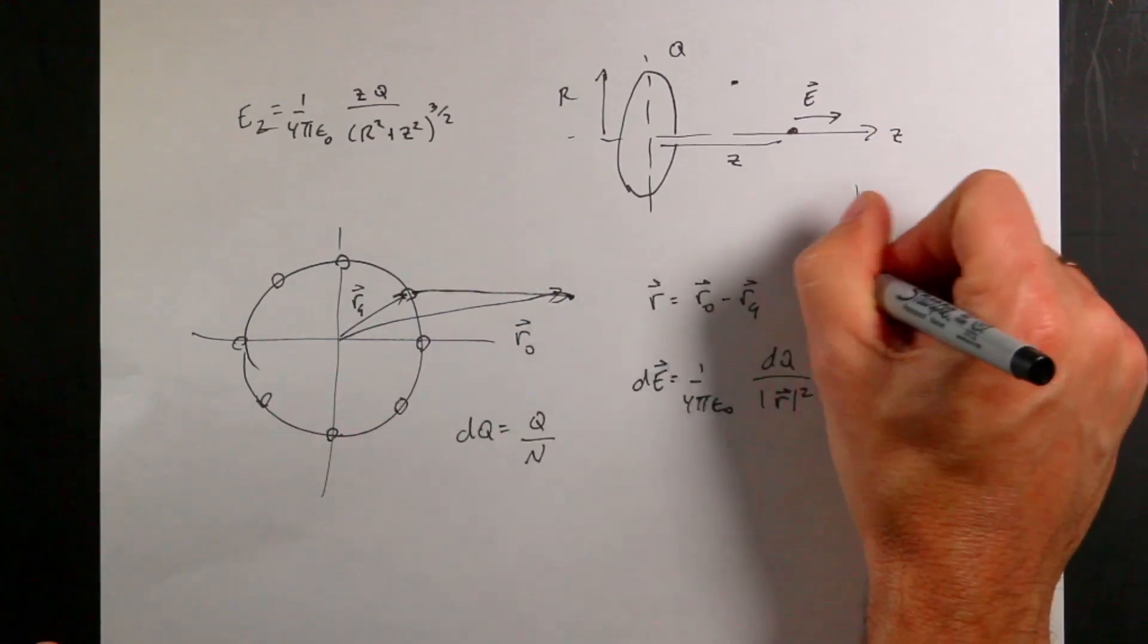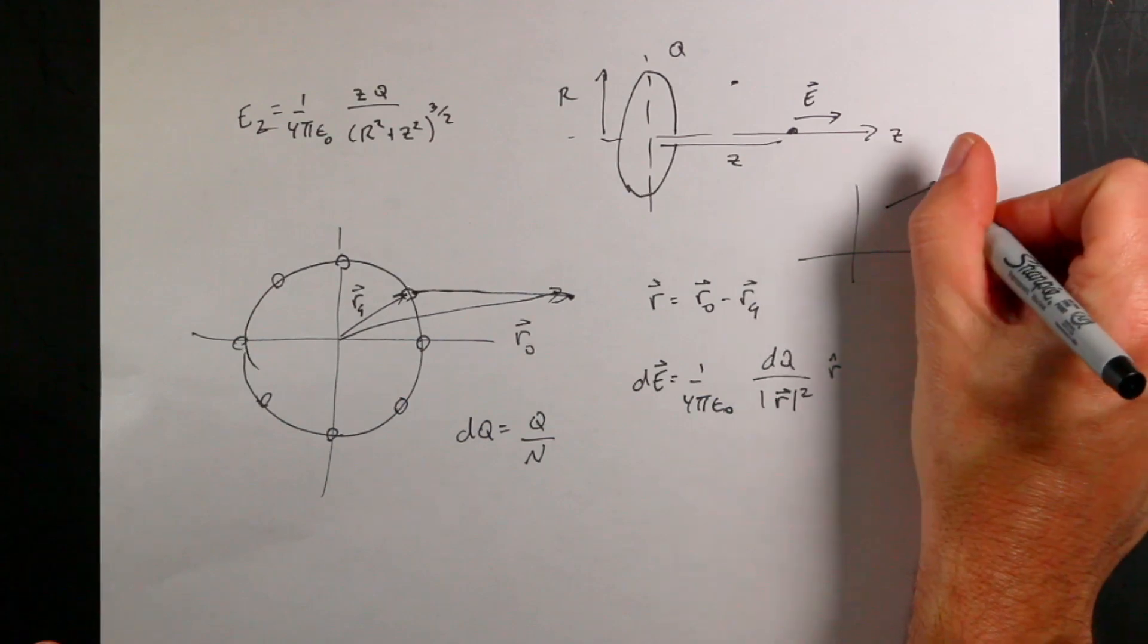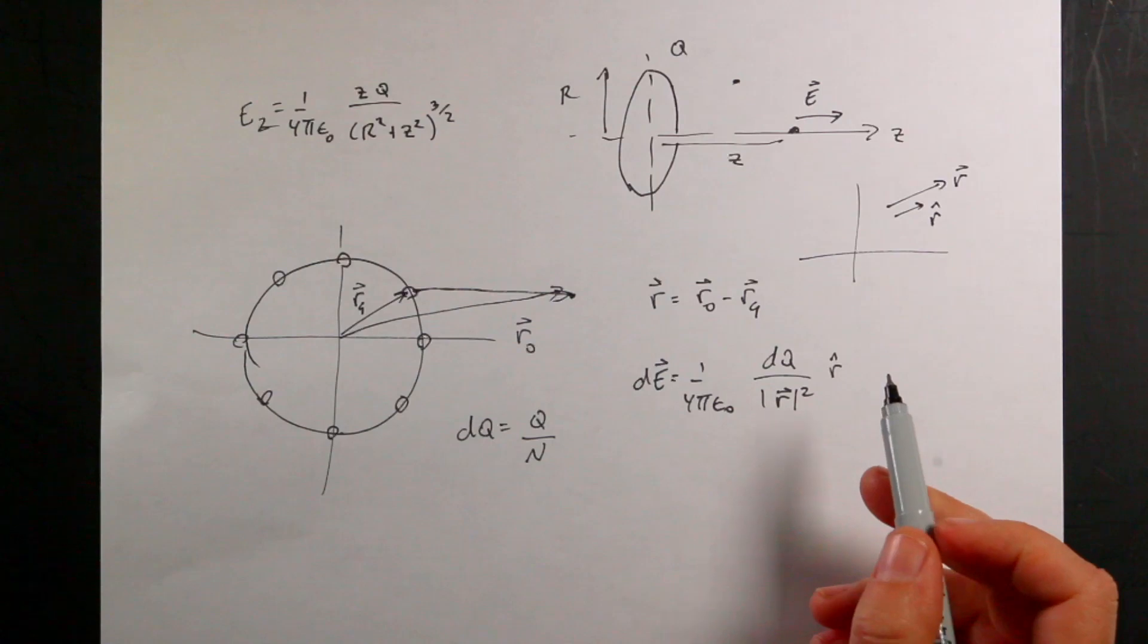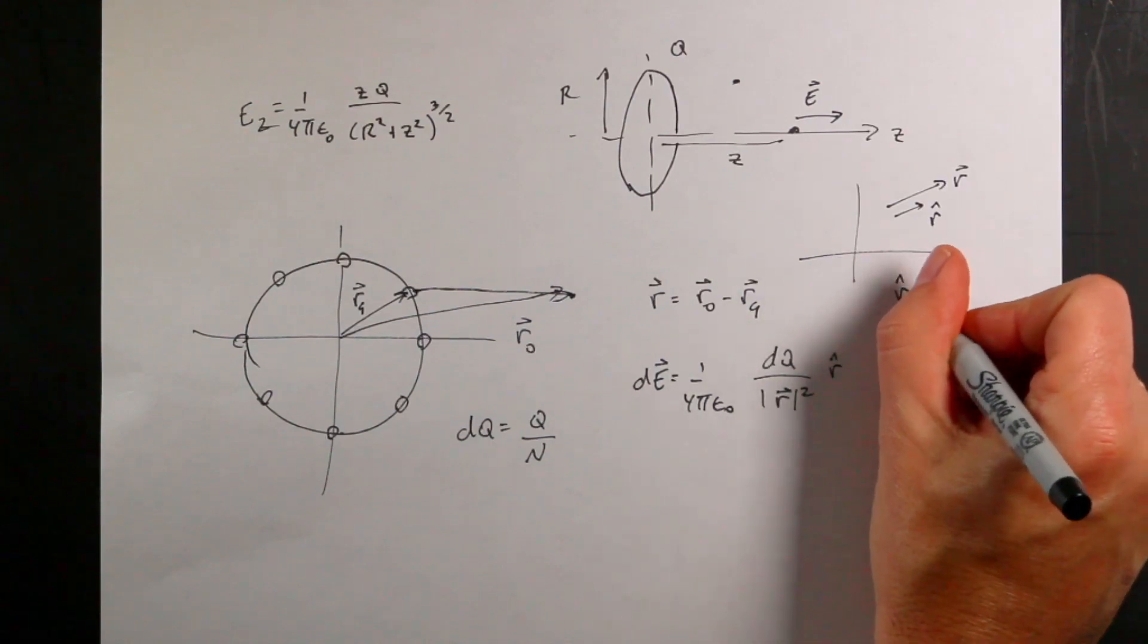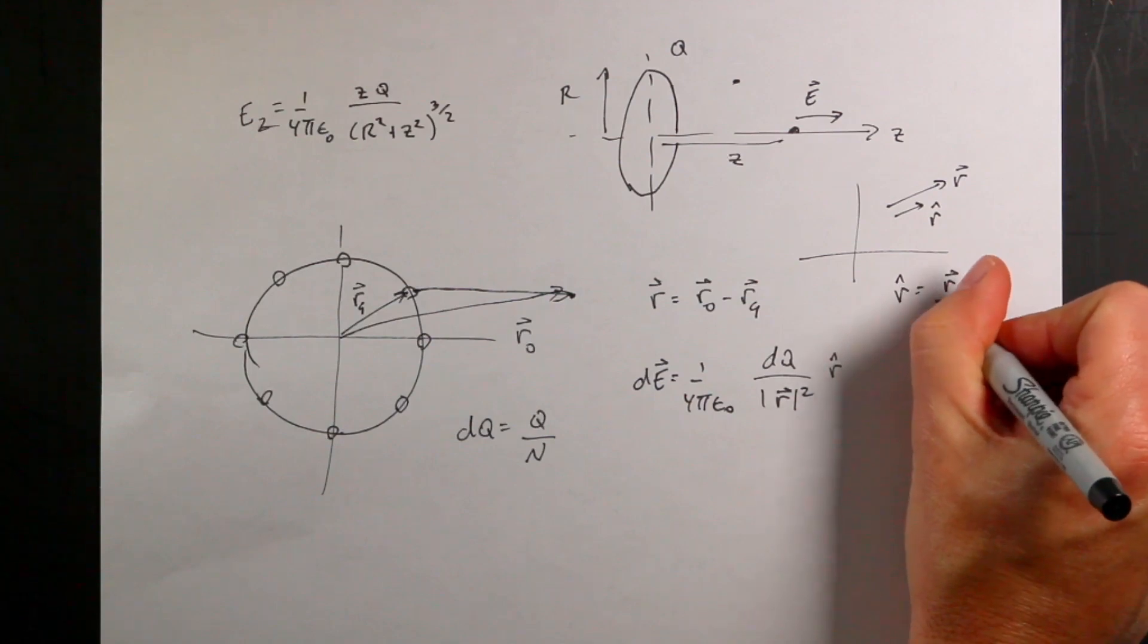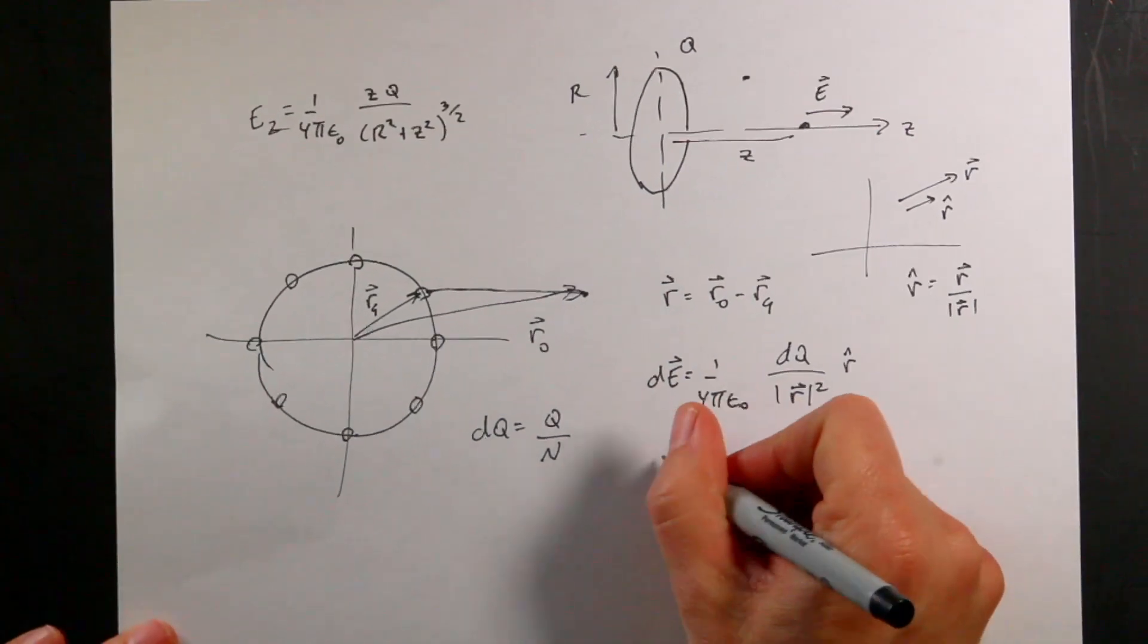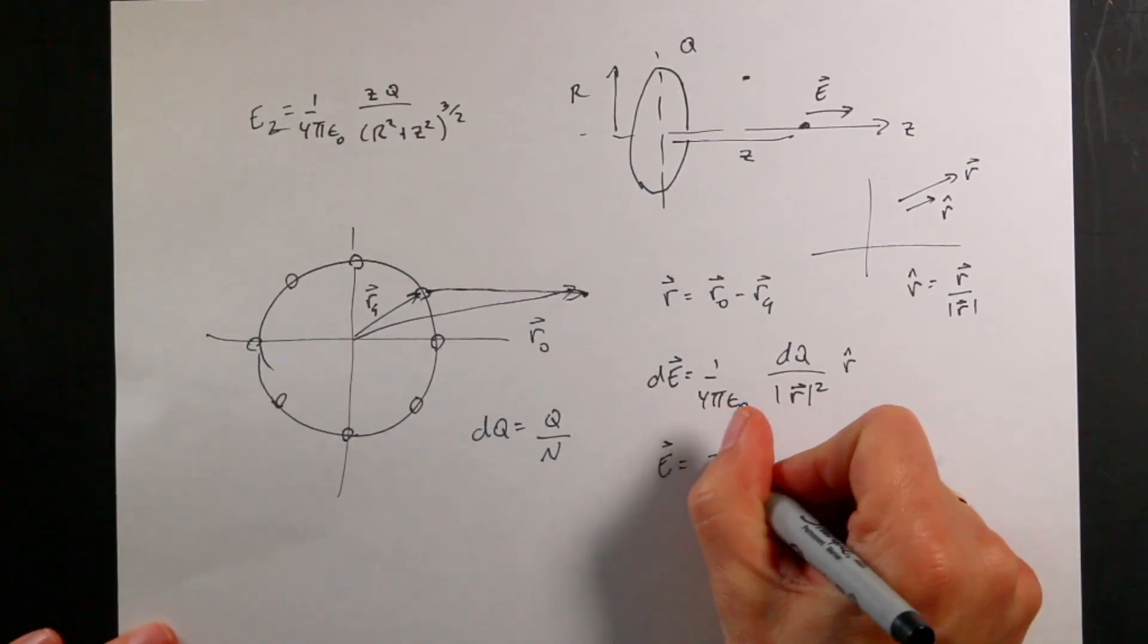We can do that in Python. This will be the vector electric field due to that one piece. Then if I do the same thing for the next piece, I'll find another dE. If I find all these dE's and add them up, that's the total electric field E = sum of dE.